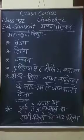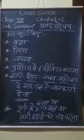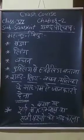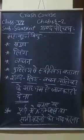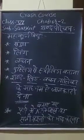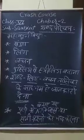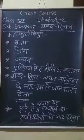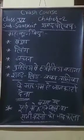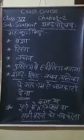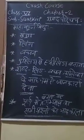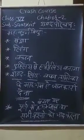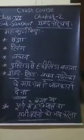वचन: जिस शब्द से किसी वस्तु या व्यक्तियों की संख्या का बोध हो, उसे वचन कहते हैं। जैसा कि आप जानते हैं, संस्कृत भाषा में तीन वचन होते हैं — एकवचन, द्विवचन, और बहुवचन। एक व्यक्ति या वस्तु का बोध कराने वाले शब्दों को एकवचन कहते हैं। जैसे — राम, नर, बालिका, पुस्तकम् — ये एक का बोध कराते हैं।